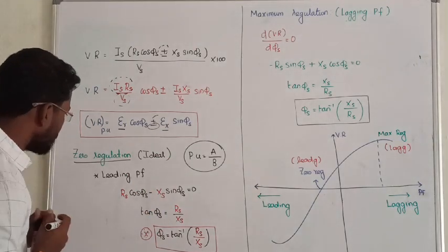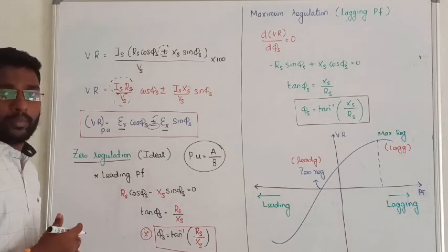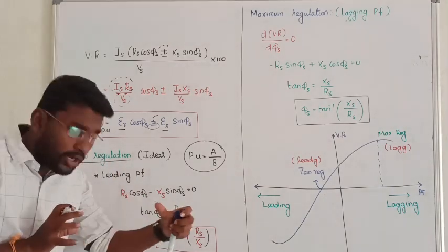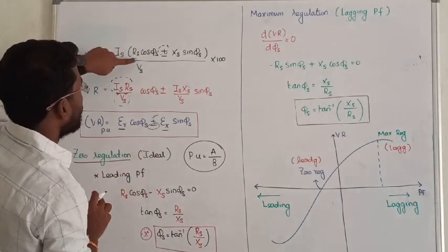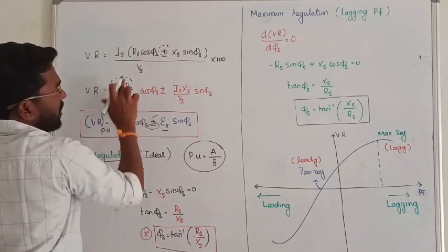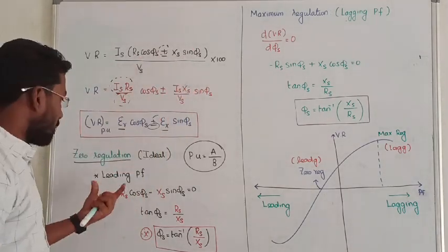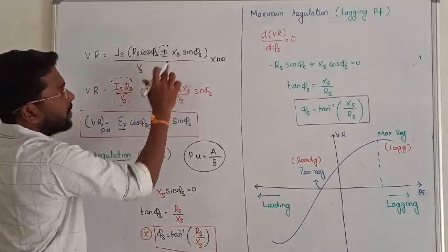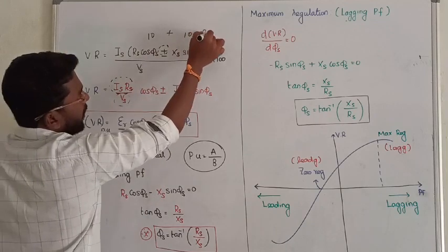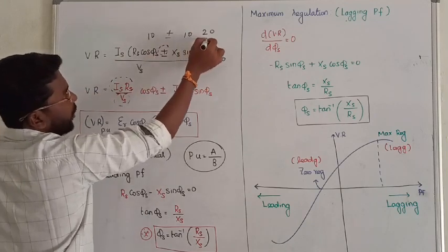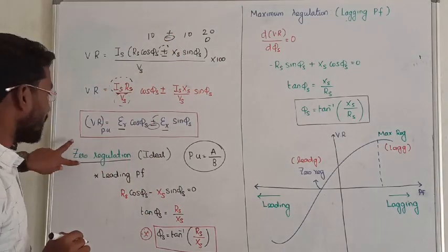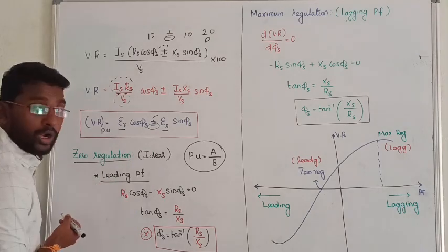Next, the zero regulation — at what power factor? Leading power factor or lagging power factor? For zero regulation we have to subtract two terms. Let us assume: 10 plus 10 gives 20, whereas 10 minus 10 gives zero. So for zero regulation I have to consider a negative sign. Therefore, zero regulation in any case is possible only under leading power factor.